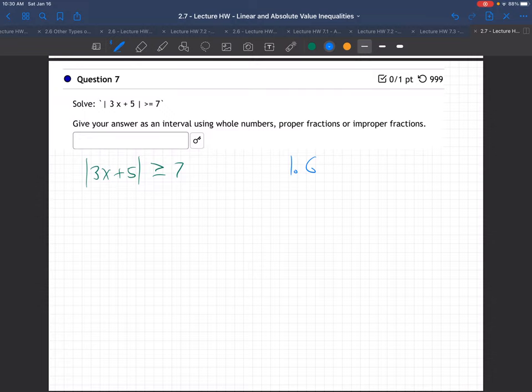So step number 1, get absolute values alone. But they already are alone. See that? I mean, if there was like a 5 plus 4 times that, we'd have to get rid of that stuff. We'd have to subtract 5 from both sides and divide by 4. But we don't have to do any of that on this one. The absolute value already is alone. So we go on to step 2.